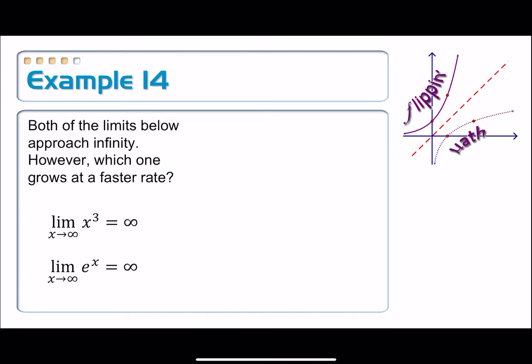We know both of those things are unbounded. They do not exist due to unbounded behavior. They're approaching positive infinity. But the question is, if I think of this as a race, which one would be winning that race? Which one would be getting to infinity faster?